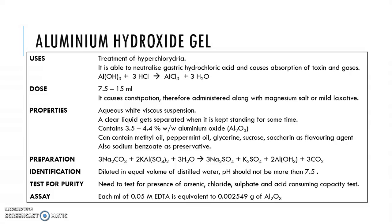Aluminium hydroxide gel can be prepared from sodium carbonate and potassium alum, yielding sodium sulfate, potassium sulfate, and aluminium hydroxide, which is then isolated to make the gel. To identify that it is pure aluminium hydroxide gel, when diluted in water the pH should not be more than 7.5. It is considered pure when there is no presence of arsenic, chloride, and sulfate.